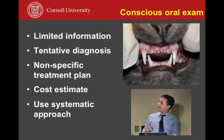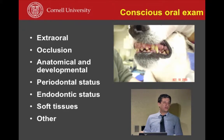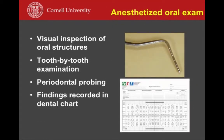Then when the animal is under anesthesia, we do a visual inspection of the entire oral cavity and focus on a tooth-by-tooth basis using the periodontal probe and explorer. We're able to probe around every single tooth, check for mobility, loss of periodontal tissues, etc. Everything when the animal is anesthetized goes in a chart.